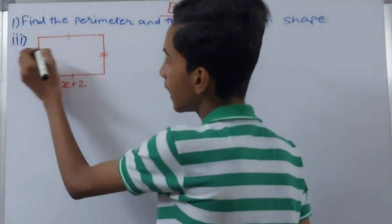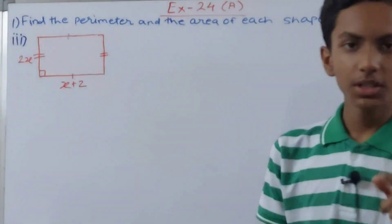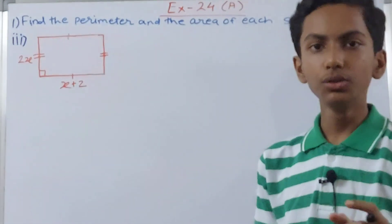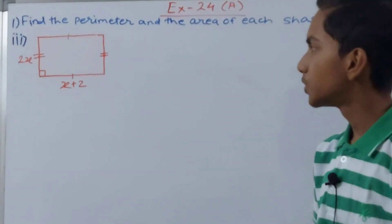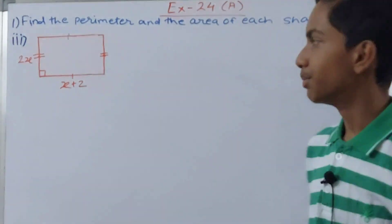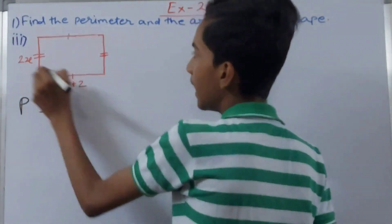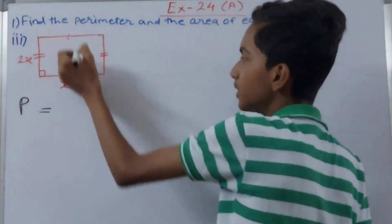Now let's solve the next one. This is again 2x and x + 2, these are the two sides. So here not a fixed value is given but two different sides are given to us. It's again going to be very simple. First we'll calculate the perimeter and this is a rectangle because two opposite sides are equal.